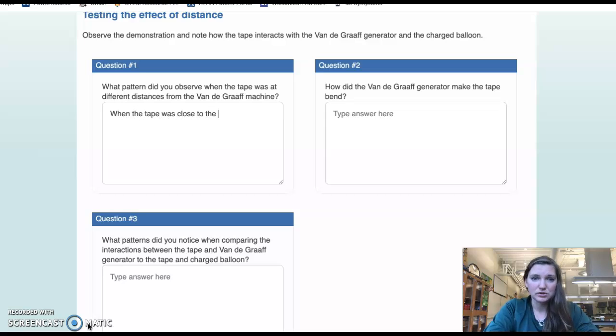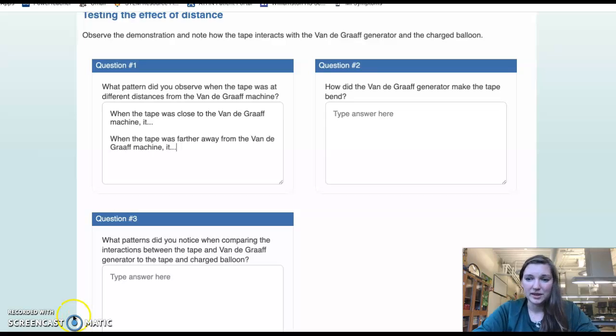So question one was, what pattern did you observe when the tape was at different distances from the Van de Graaff machine? So here's a sentence starter for that one. When the tape was close to the Van de Graaff machine, it... and then you can say when the tape was farther away from the Van de Graaff machine, it... Okay, so that had a strong charge, both close and far.